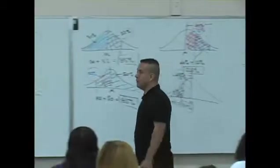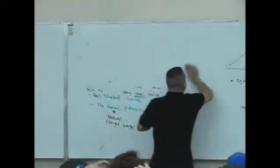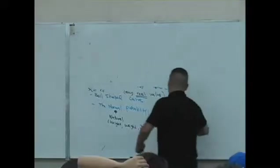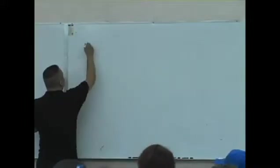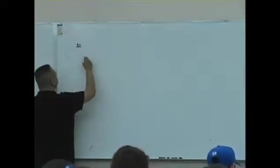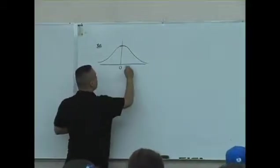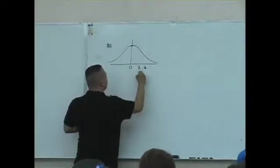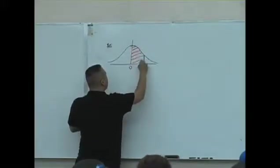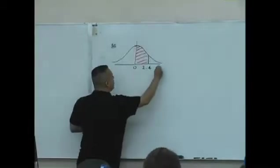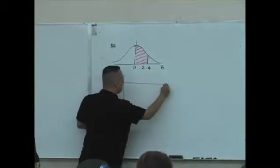Now I'm going to ask you a few questions here. Because we have to go through all this before we go through a single problem. So here we go. For example, 0, 2.4. What percent of the bell is shaded if my z-score is between 0 and 2.4? What do you guys look for here?